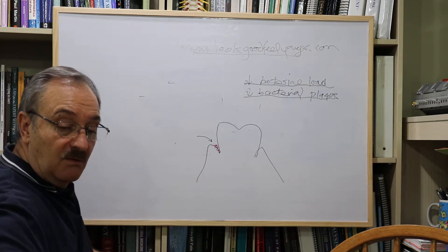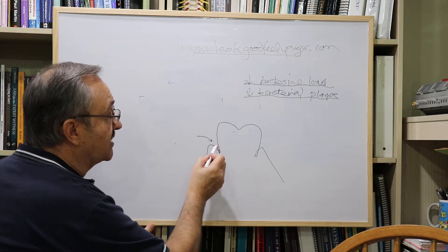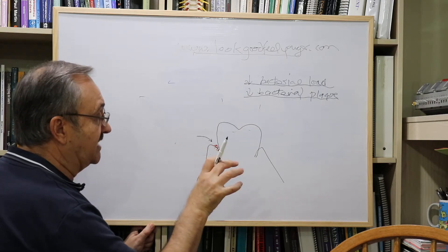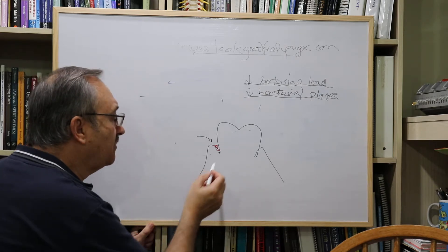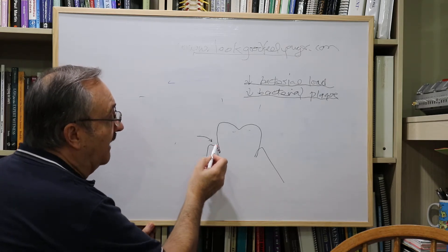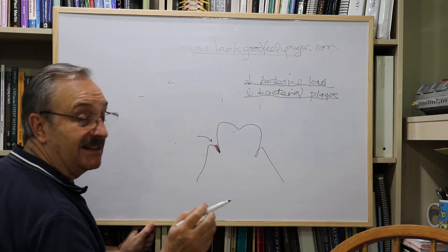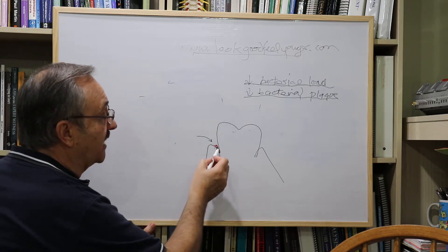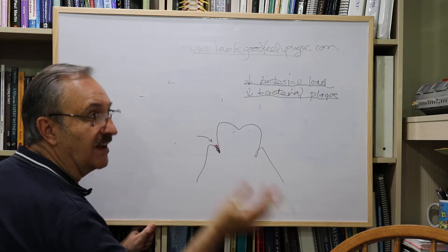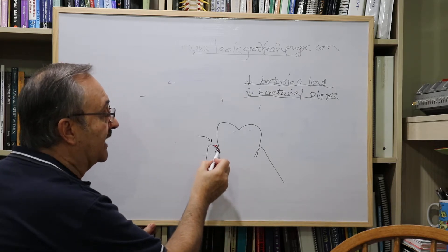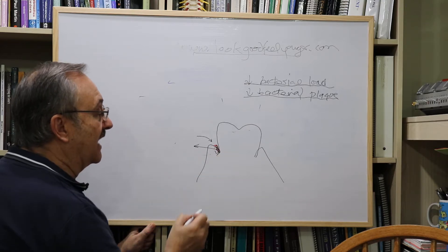And if you leave it there for too long, what happens is you get scale, calculus, tartar, whatever you want to call it, because that calcifies. In other words, it's a bit like a reef, I suppose. And that's why the hygienist or the dentist removes this, because it's not actually the scale that's causing any problem, but what it does is it prevents you from cleaning properly because the plaque hides out underneath. So it's a good idea to get rid of that just so that you can get in and clean it properly.